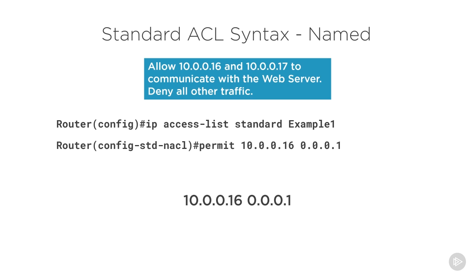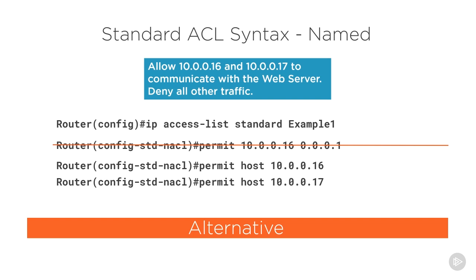We want to permit traffic from those two devices to reach the web server, so we say: permit 10.0.0.16 0.0.0.1. That statement will allow either 10.0.0.16 or 10.0.0.17. Alternatively, we could list each address individually, but for larger ranges like a /24, it would be ridiculous to write 256 lines. For a /24, we just need a wildcard mask of 0.0.0.255 to cover all addresses in one line.